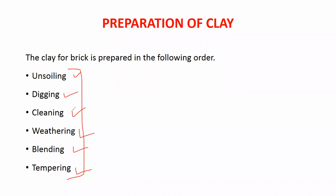Unsoiling means after choosing a site to collect clay, we first remove the top layer of soil because there are many impurities there, as it is exposed to the environment with lots of vegetation and organic matter. We remove 200 mm depth of soil. Below 200 mm, we go for digging to collect the clay.